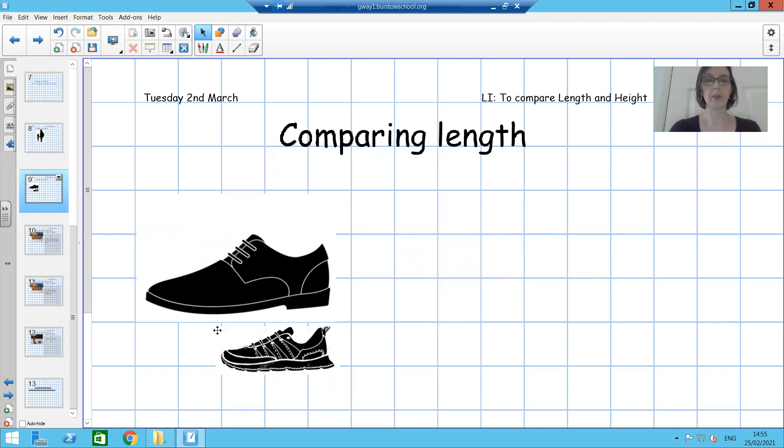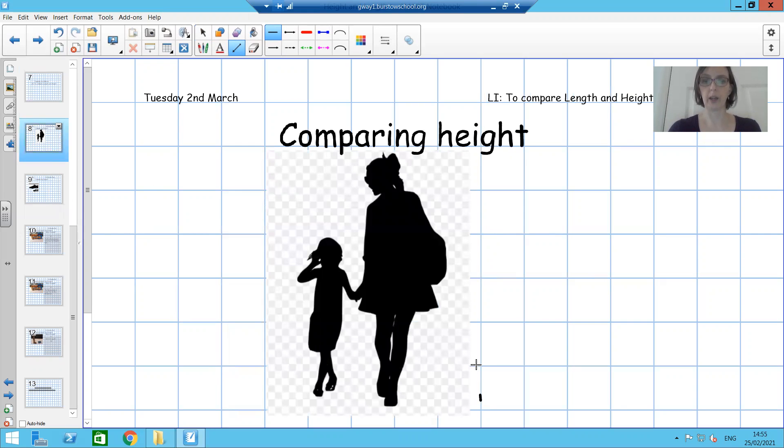So when we're looking at length, it's going along, isn't it? We're looking at the direction that way. When we were looking at height, we were looking up. Who's tallest from the ground up?